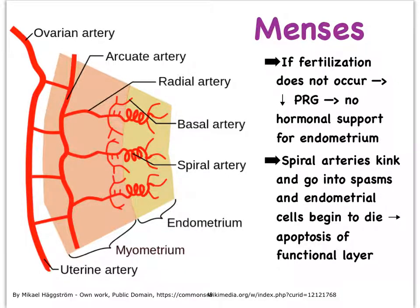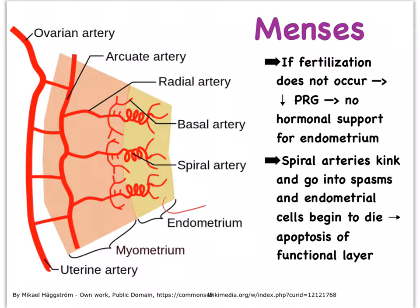In that layer, we have these rather spiral-looking arteries, and what's going to happen is that they'll go into spasms and cause the cells around them to die. We see apoptosis occurring of this functional layer, and it will ultimately slough off and produce the menses that we're familiar with.